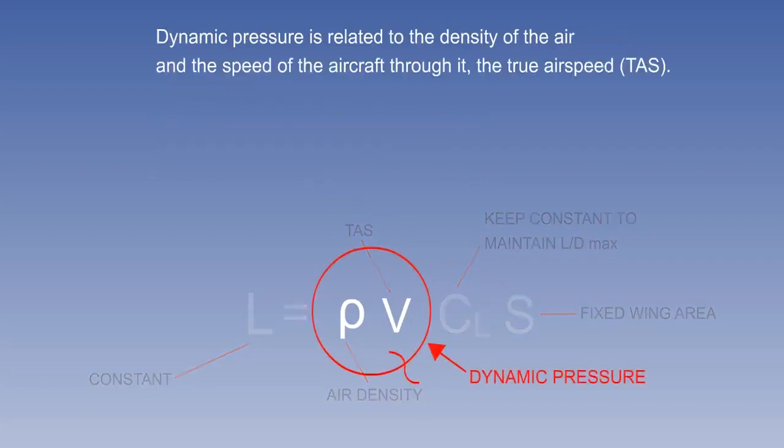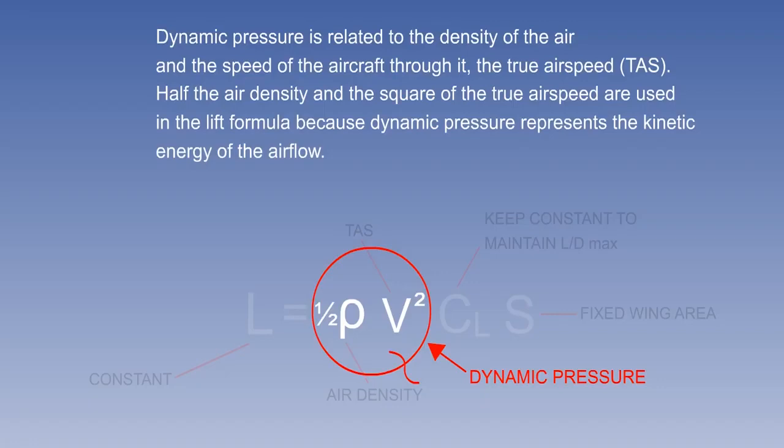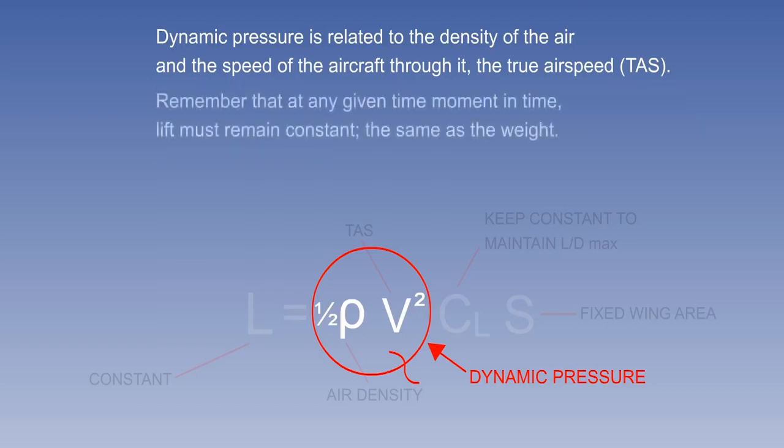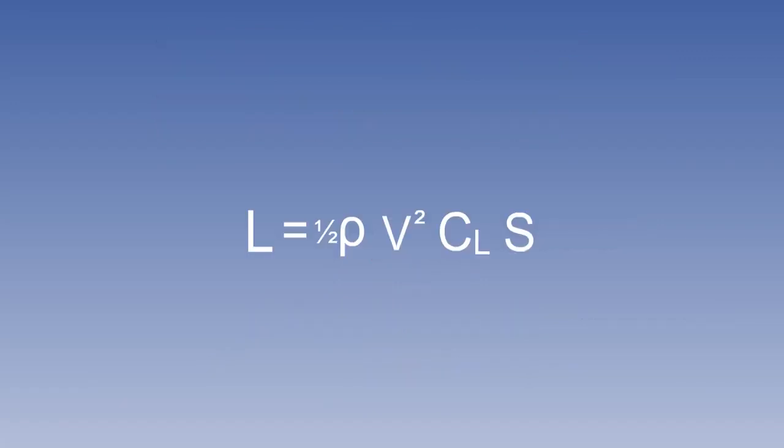Dynamic pressure depends on air density and TAS and is related to the kinetic energy of the airflow. So the formula is based on half the density and the square of the TAS. Remember that for straight and level flight, lift must remain constant. It is important to remember this formula: L equals half rho V squared times C_L times S.